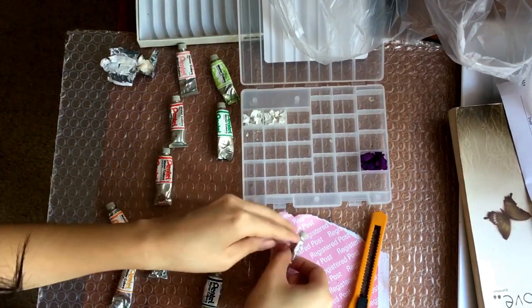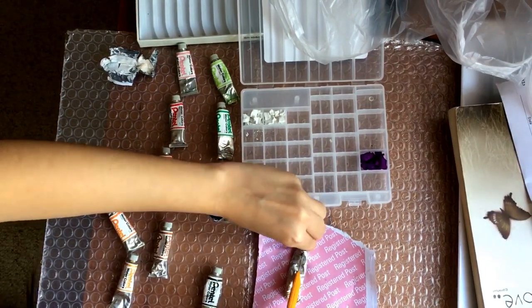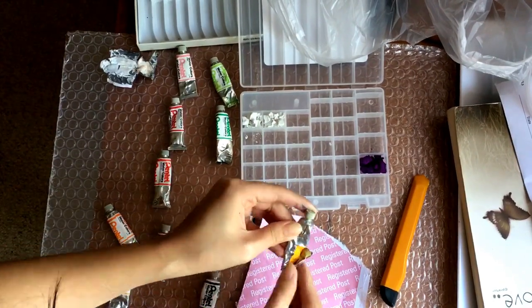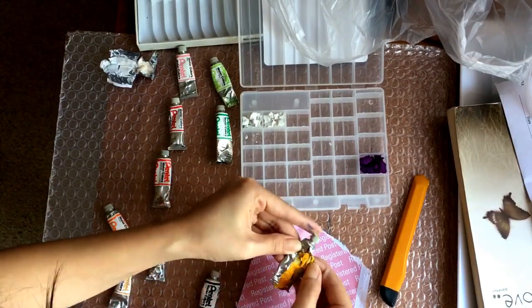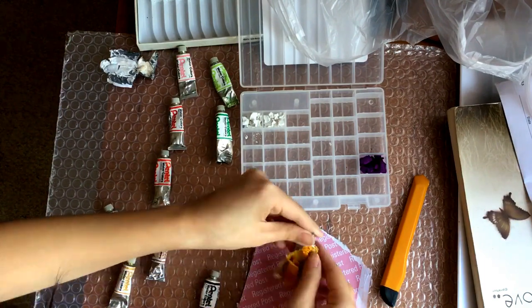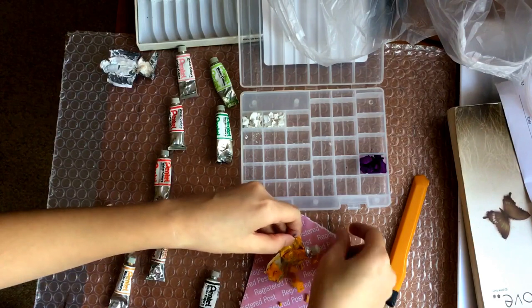In the middle, I'm putting all the reddish colors like pink, orange, red, and dark brown. Then on the right, I'm placing the darker colors like green, blue, and purple.